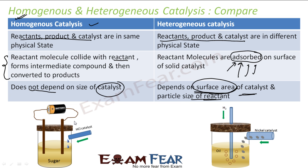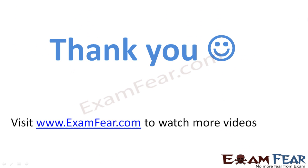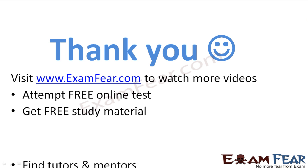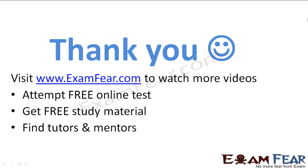HCl and sugar as liquids is the example of homogeneous catalysis. Nickel solid with liquid oil in hydrogenation, and inversion of sugar, are examples of heterogeneous catalysis. Thank you. Visit examfear.com to watch more videos, attempt free online tests, get study materials, find tutors and mentors, and much more.